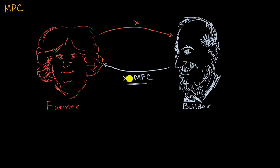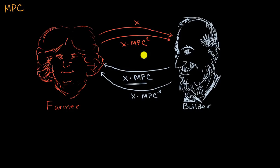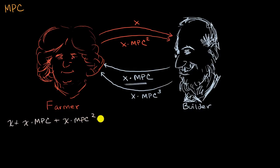Now the farmer has that money and she's going to spend it times the marginal propensity to consume. So she spends X times MPC — that's how much she got from the builder — and then she spends that times MPC again, giving MPC squared. Then he gets that amount and spends it times MPC again. This just keeps going on and on. To find total increased output from the initial expenditure of X dollars, you sum everything up: X + X·MPC + X·MPC² and so on.